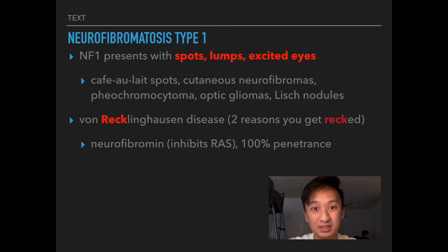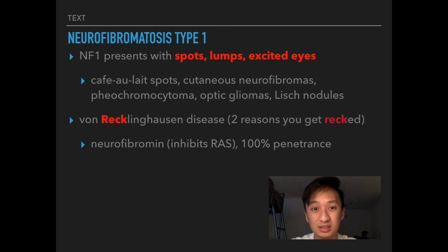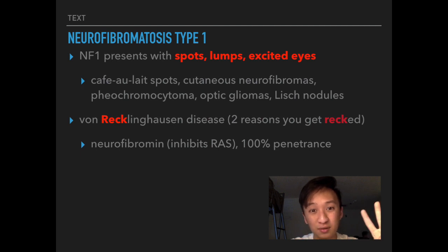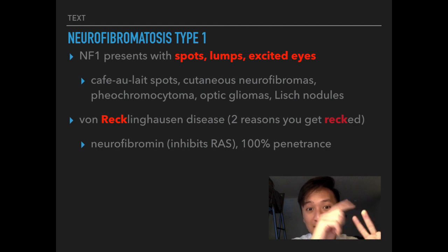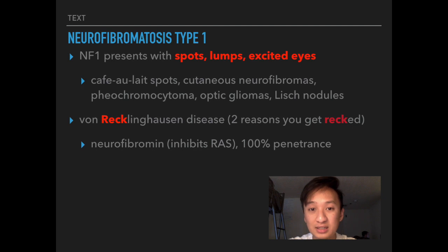The second way NF Type 1 'wrecks' you is through disinhibition of RAS. Normally, neurofibromin — the NF1 gene product — encodes for inhibition of RAS GTPase. Without that inhibition, you get tonically active RAS GTPase, which wrecks your cells and gives you all the spots, lumps, and excited eyes.